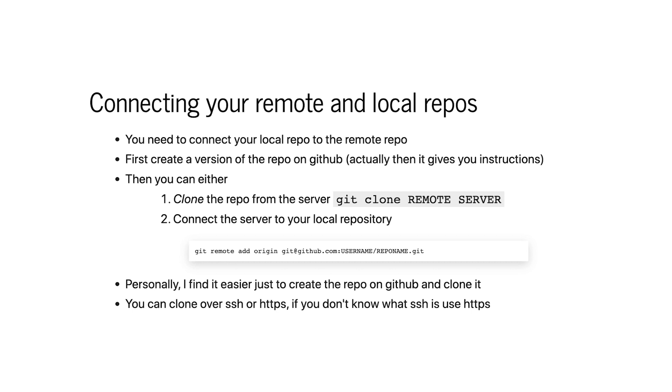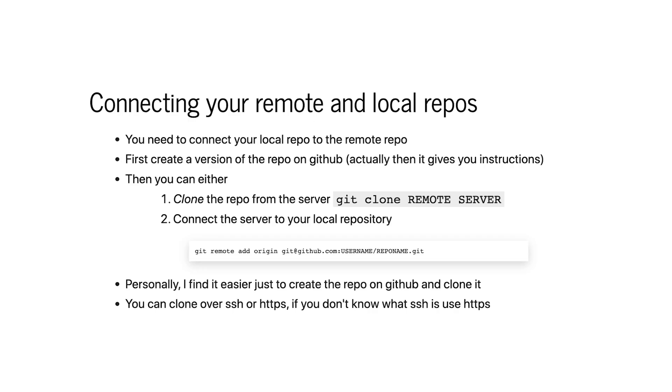Cloning a repository means making a copy of that repository connected to it on your local computer. You then have a Git repository locally and on the remote. The other approach would be to have the repository on GitHub and your repository initialized locally, then inside your local repository run git remote add origin followed by the GitHub repository URL to connect them. I find that a bit frustrating, so I almost always just clone.